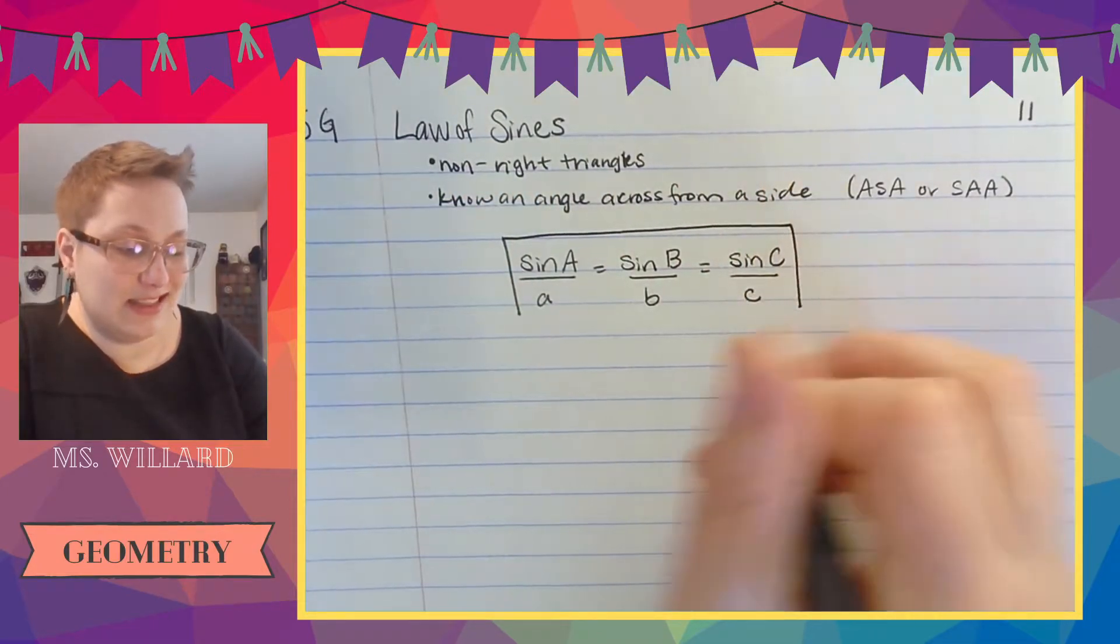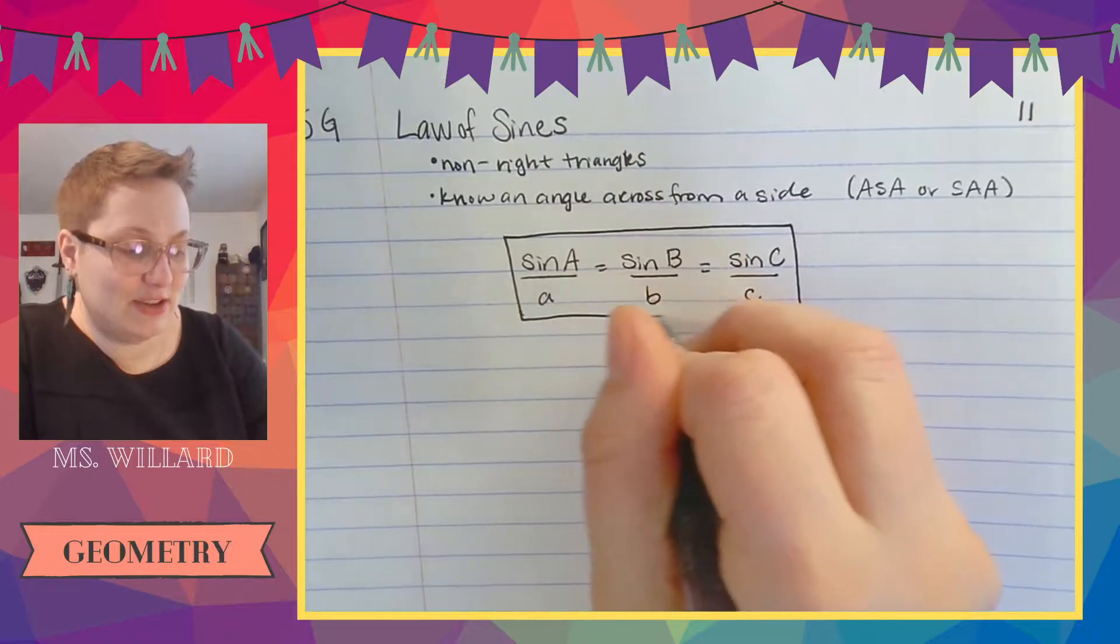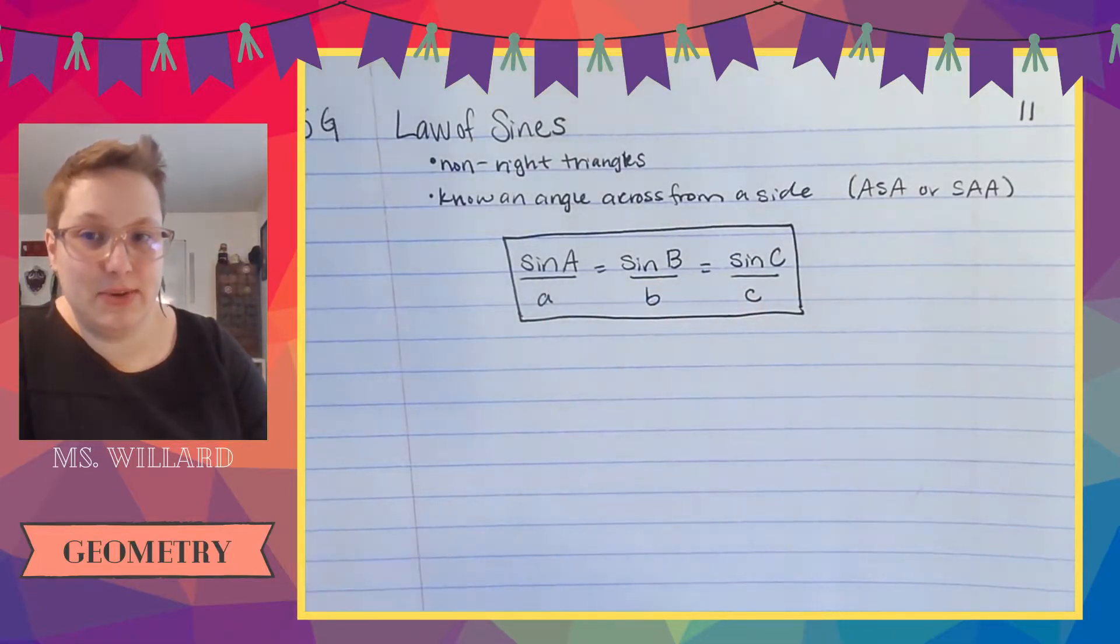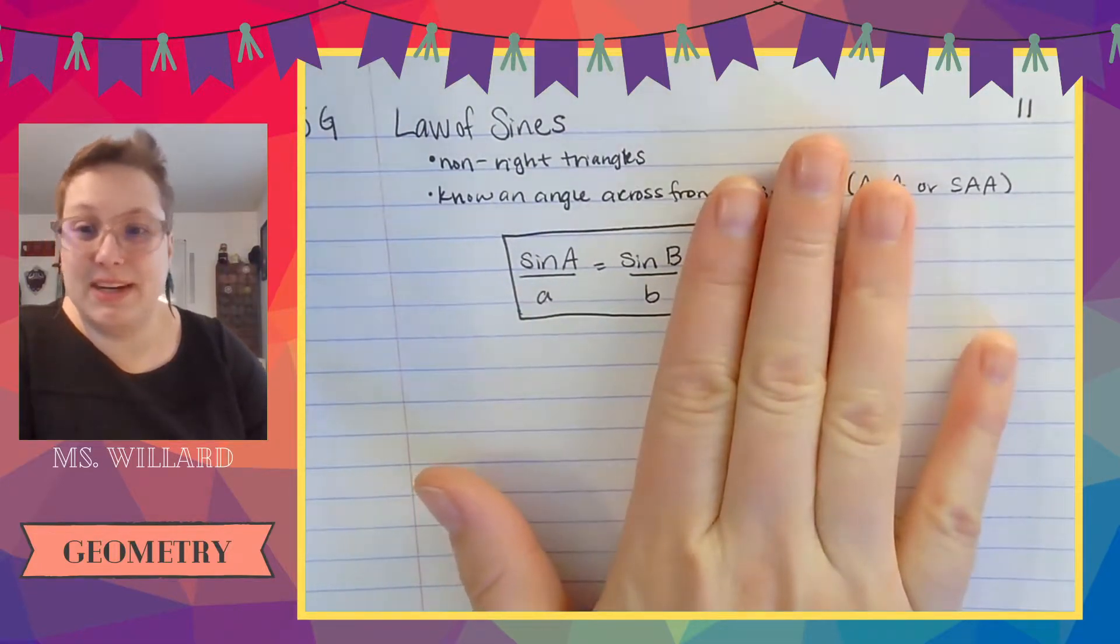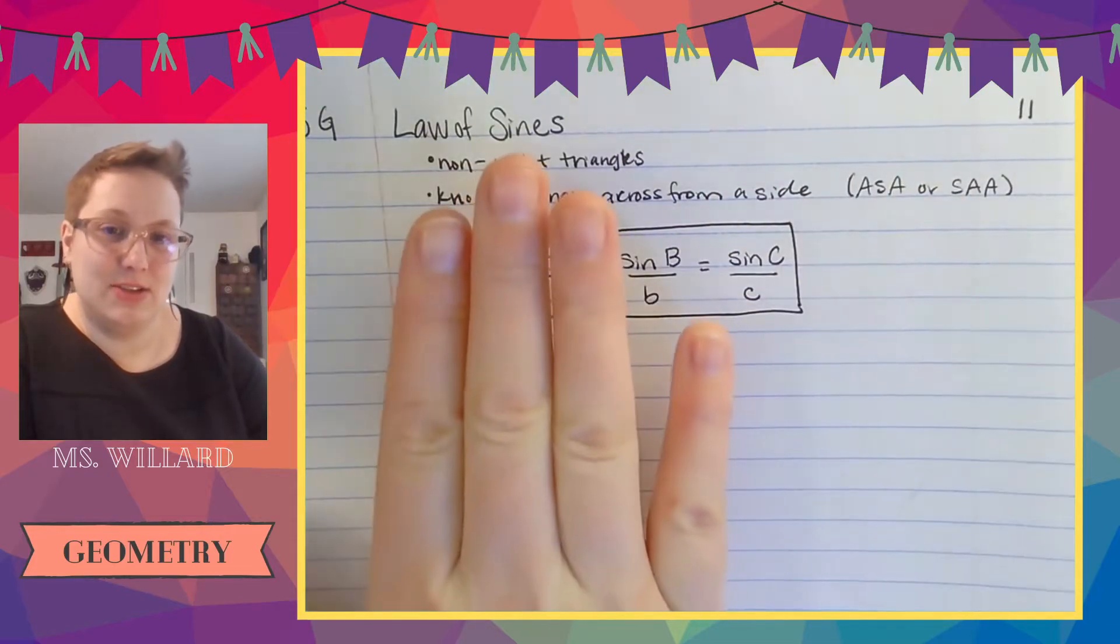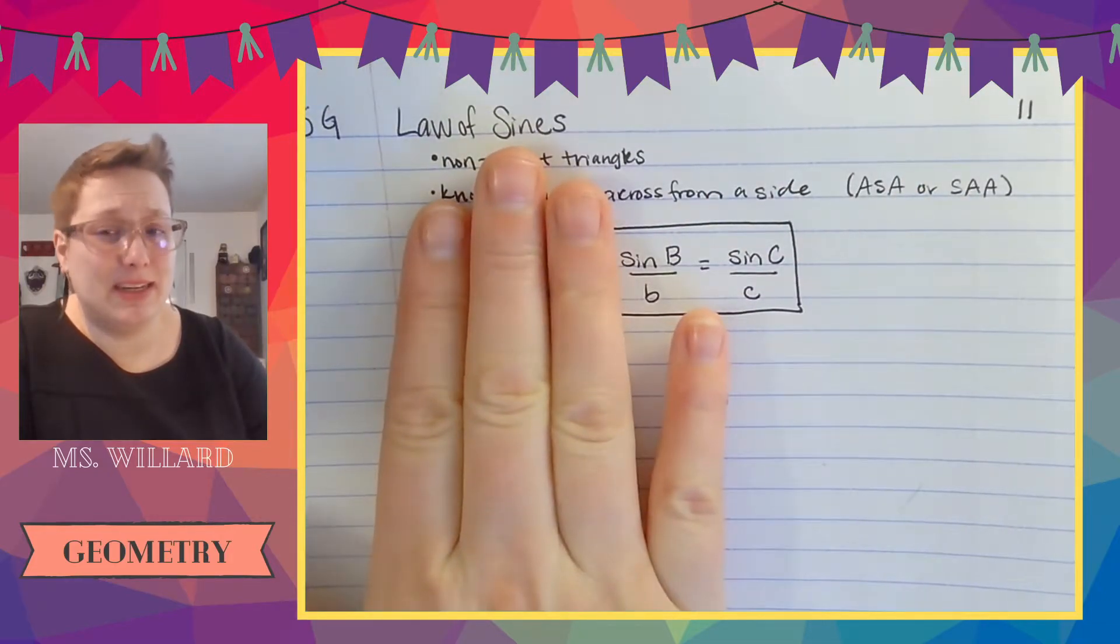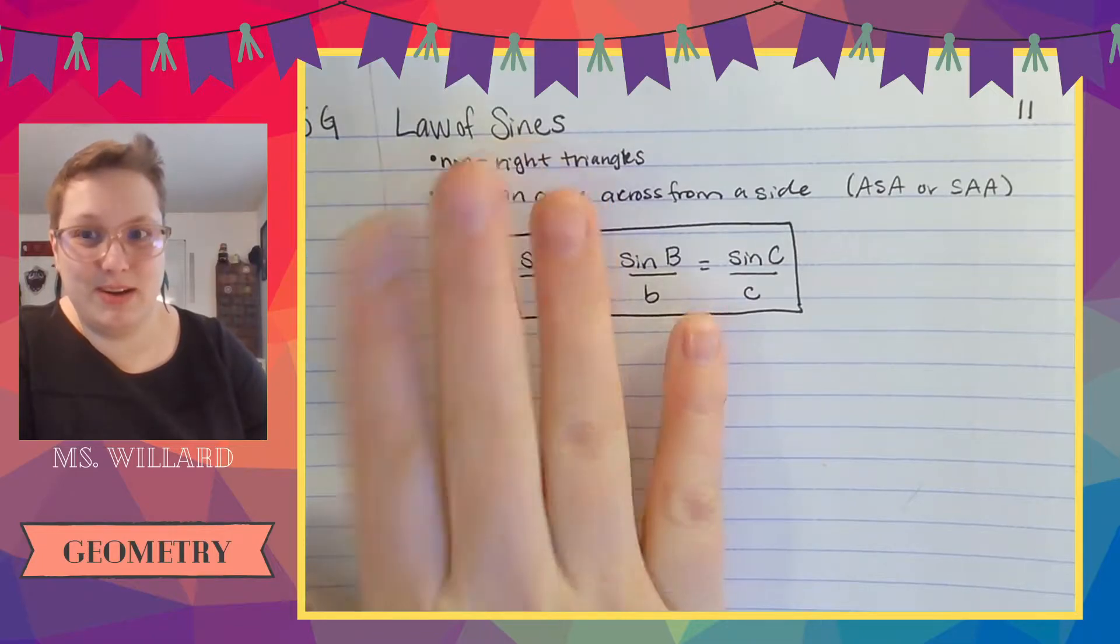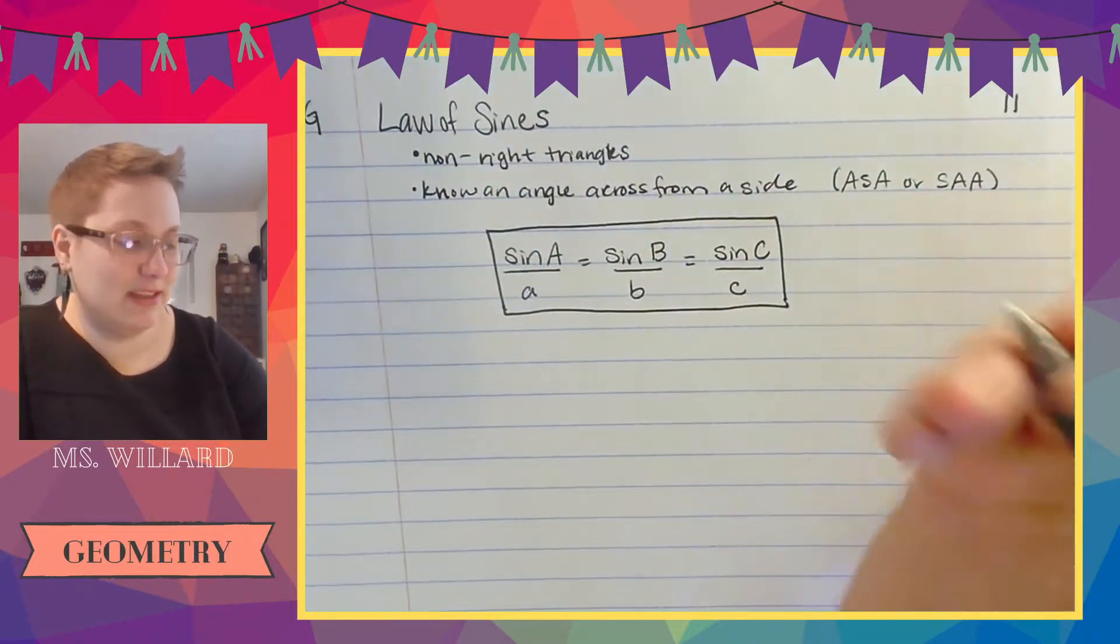But you don't need to use all three at once. This is not like a triple fraction. It's not a double equals double equation. I would just cover up the part that I don't want. So if I only care about b's and c's I'm going to ignore a exists. It doesn't exist anymore.